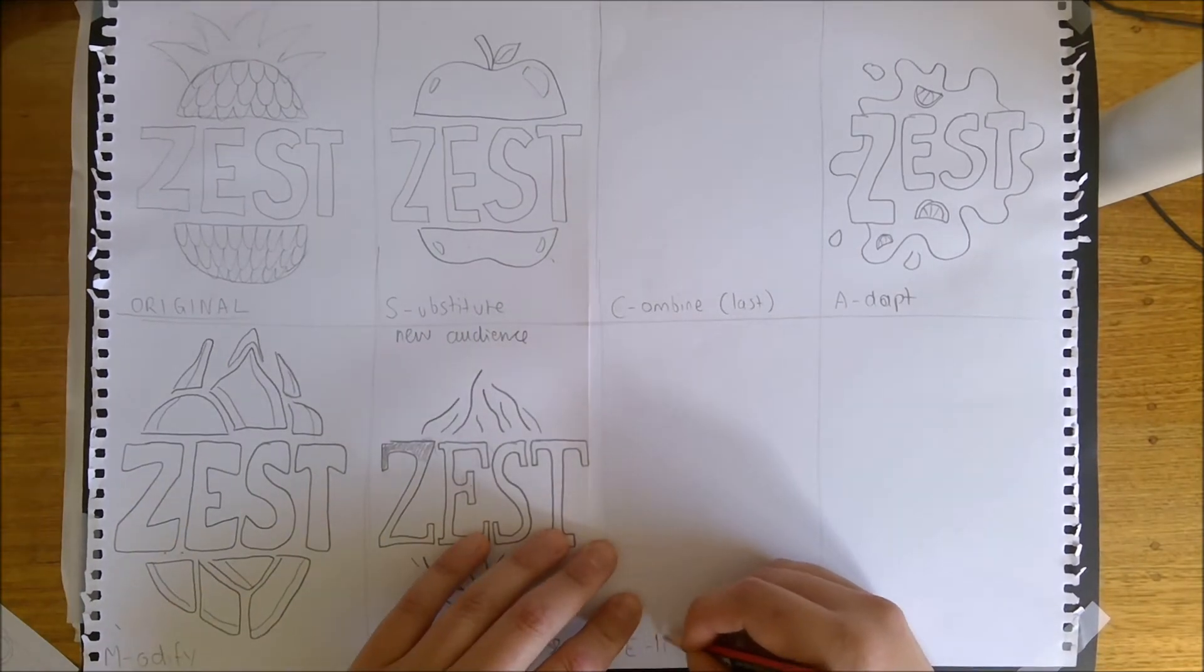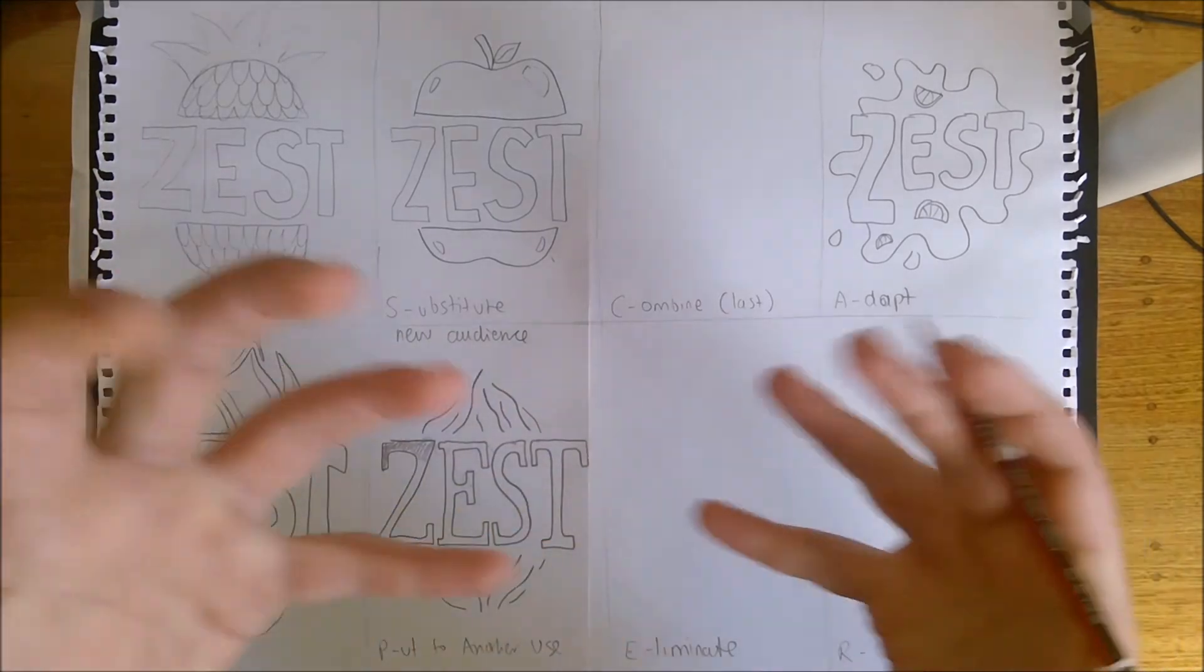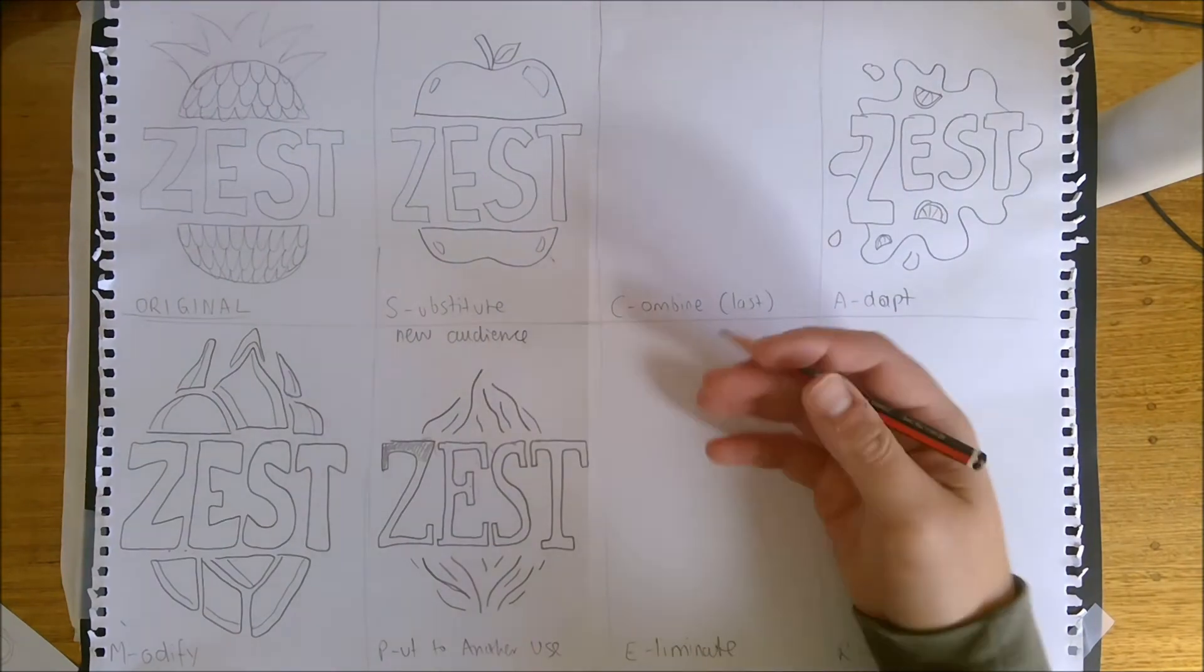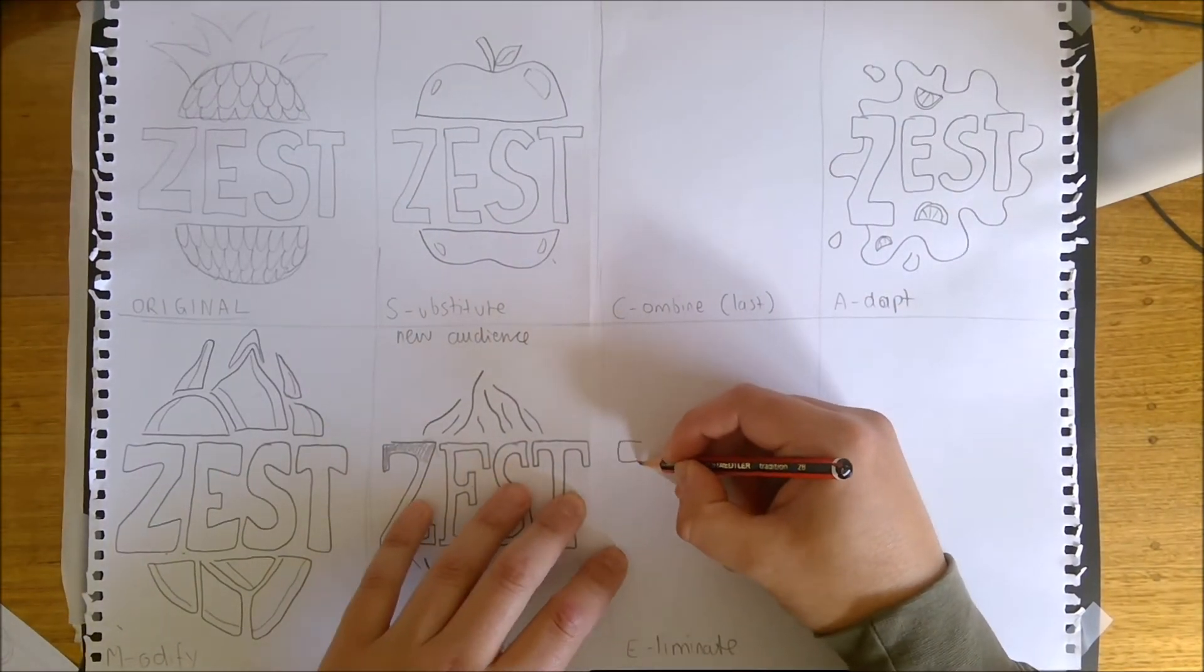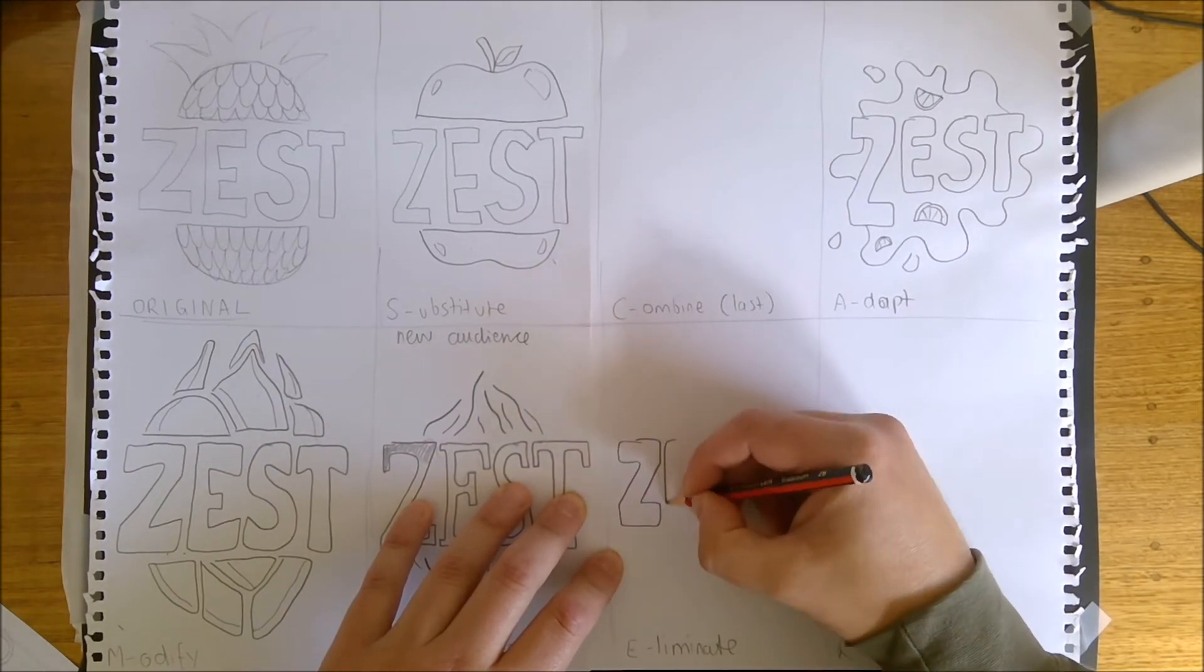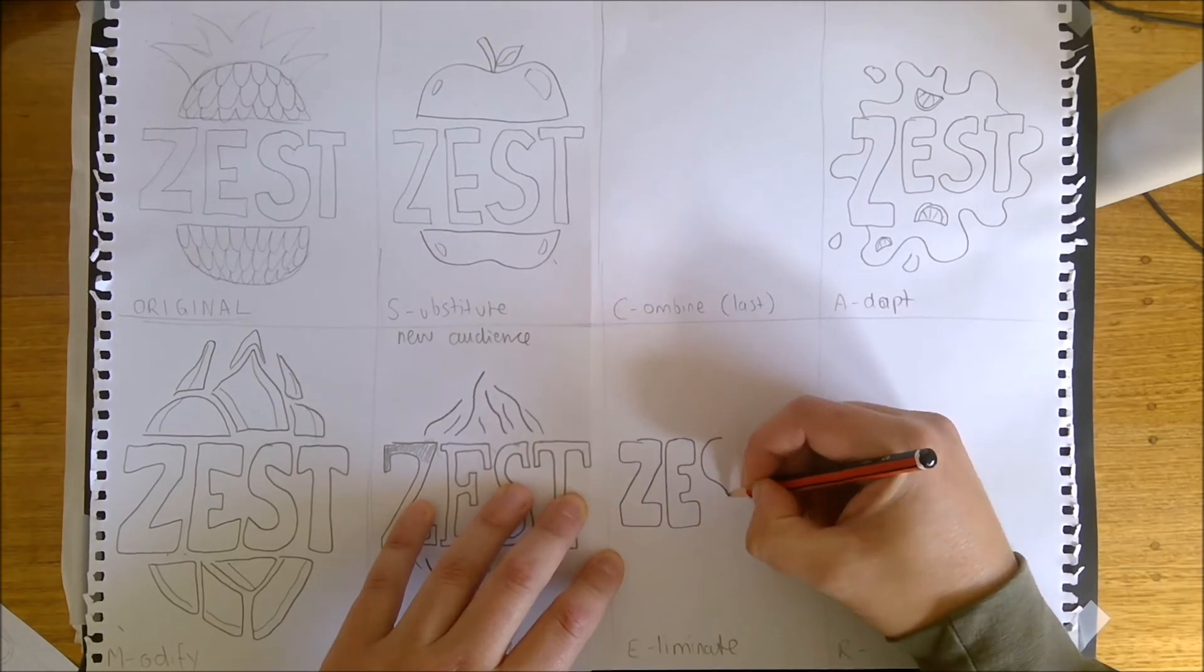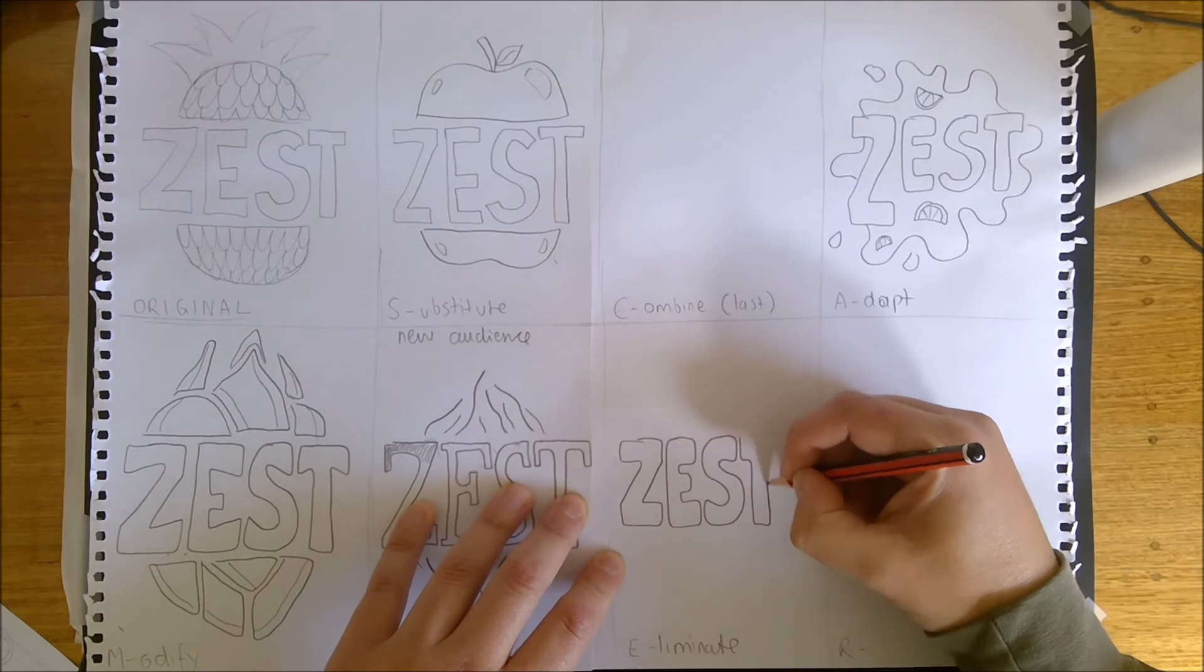E is eliminate, and what that means is we need to take away from our design. We've been adding a lot to it, trying to make it a little more complicated. What we're going to do now is we're going to minimize and simplify it quite easily. So what I'm going to do is I'm going to reuse kind of my initial font but I'm going to round the edges a little bit, so I'm going to eliminate those corners. As you can see, I've probably generated a more family-friendly, young people font.